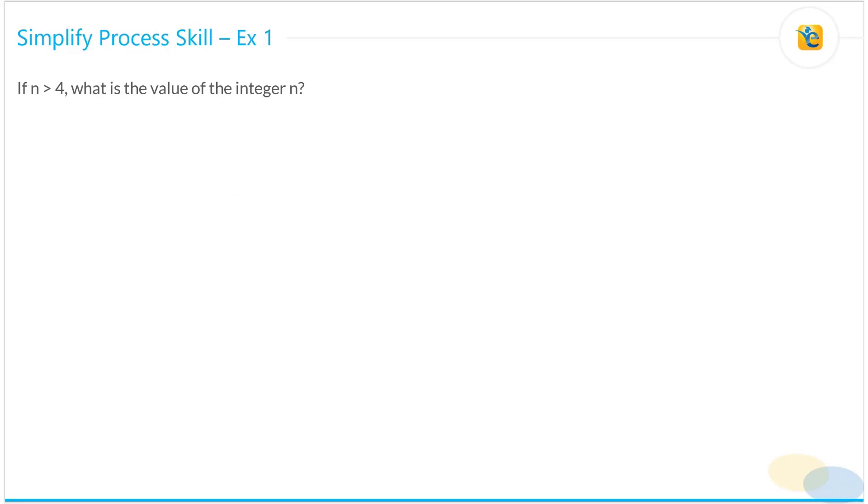Let's solve this question. If n is greater than 4, what is the value of the integer n? So we need to find out the value of this number n and we know that it's an integer. And because we know that it's greater than 4 and that it's an integer, what we know is that n is a positive number. Now let's take a look at statement 1.